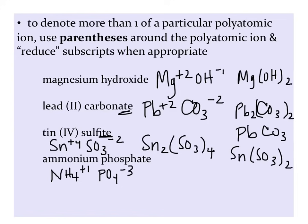And in the last example, we have ammonium phosphate. Ammonium is the only positively charged polyatomic ion on our list. And phosphate has an -ate ending, so that indicates a polyatomic ion. It's PO4 with a negative three charge. Once we crisscross our charges, we put the ammonium in parentheses with the three outside, and then the phosphate does not need parentheses, because we're going to have just one of the phosphate polyatomic ions.